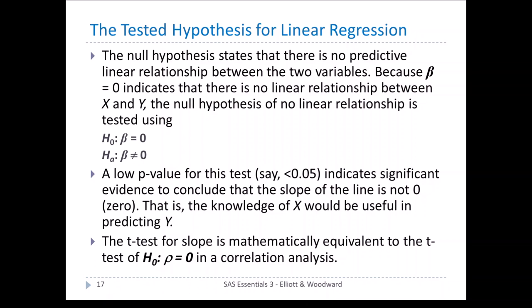The tested hypothesis for linear regression is as follows. The null hypothesis states beta equals 0 — no predictive linear relationship between X and Y. The alternative is beta not equal to 0. A low p-value (p < 0.05) provides significant evidence to conclude the slope is not 0, meaning knowledge of X is useful in predicting Y. Notably, the t-test for the slope is mathematically the same as the t-test of the correlation null hypothesis rho equals 0.